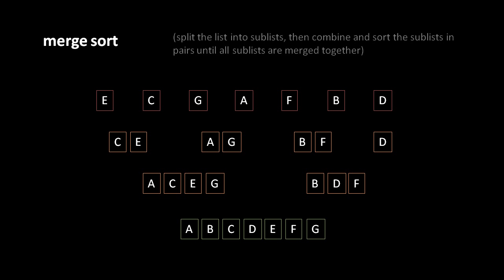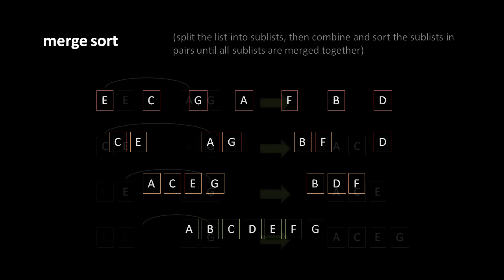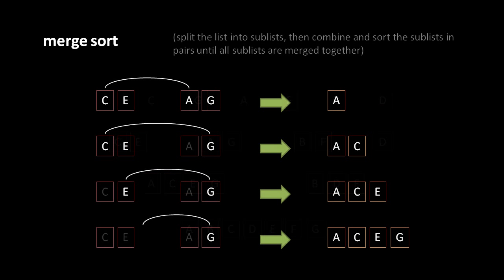What makes this generally one of the more efficient sorting algorithms is how we do the merge process. Say we're merging the sublists C and E, and A and G. We always merge sublists which are in themselves sorted — C and E is properly sorted, and A and G is also properly sorted.